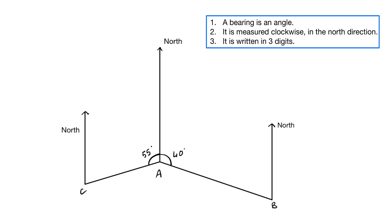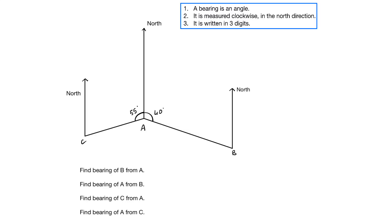Let's read some questions now. The first question: find the bearing of B from A. So we look at A. From the north, we go clockwise. The bearing we are getting is 40. But remember, we have to write it in three digits, so we add a zero in the front. So the bearing of B from A is 040.